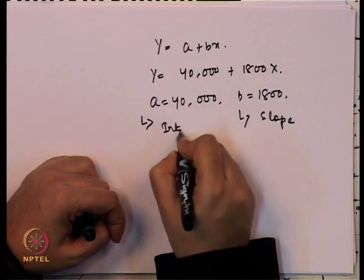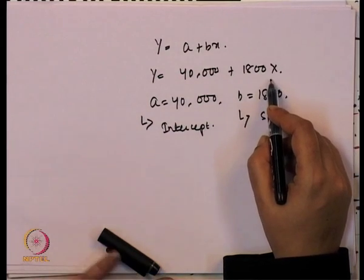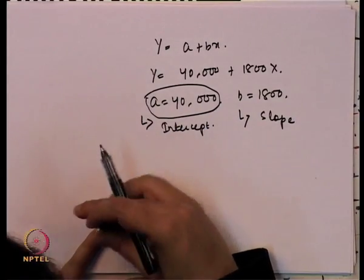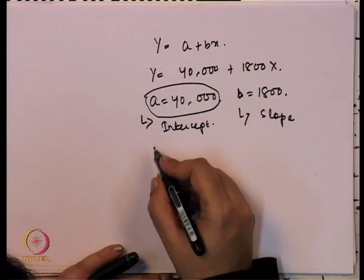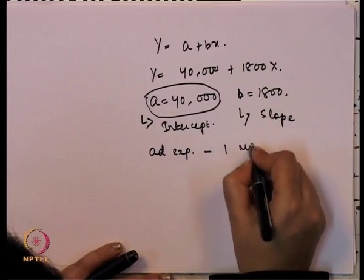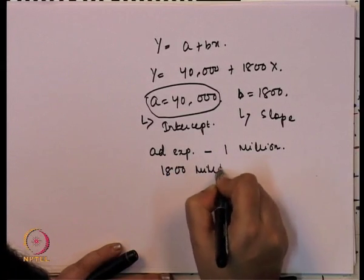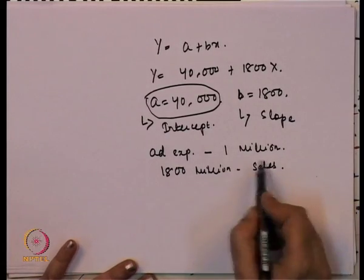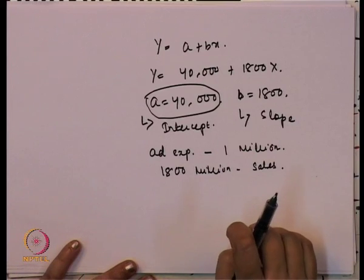Suppose we take a value: y = 40,000 + 1800x. Here a is 40,000 (the intercept) and b is 1,800 (the slope). If y is sales and x is advertisement expenditure, when there is no advertisement expenditure the value of y will be equal to 40,000. Since the value of b is 1,800, if the measurement unit is in million terms, advertisement expenditure of 1 million will bring 1,800 million increase in sales.